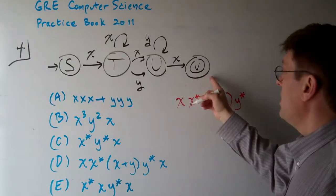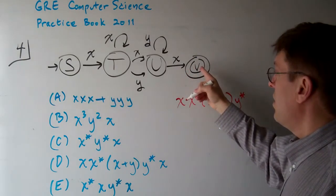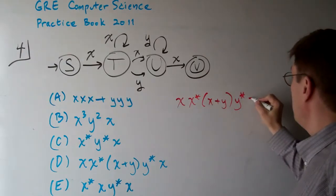And then to complete to the final completion stage, the end state, the acceptance state, go to W. You need an X.